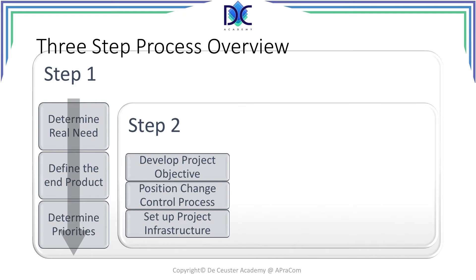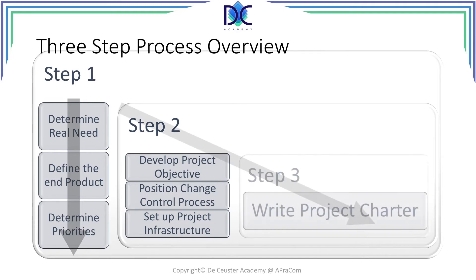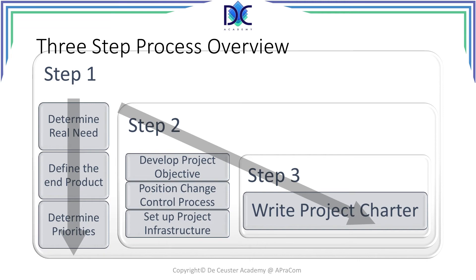All these process steps brought together will create the project charter. This overview gives you a step-by-step approach to write a good charter. You can use this template as a guiding process for creating your charter, adjust it to your specific needs, and update it whenever you find things that can be improved. At the end of the three-step process, you get your project charter.